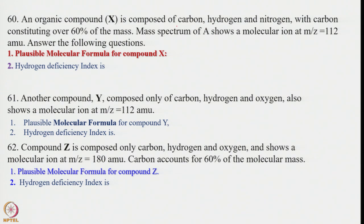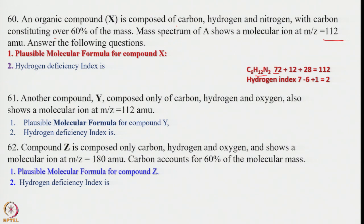Now let us look at a few mass spectrometry examples. An organic compound A is composed of carbon, hydrogen, and nitrogen, with carbon constituting over 60% of the mass. The mass spectrum shows a molecular ion at m/z = 112. Since 60% of 112 is approximately 67, there should be at least 7 carbon atoms. Using Rule of 13, C6H12N2 is a plausible molecular formula with HDI = 2. Similarly, without nitrogen but with oxygen, C6H8O2 gives HDI = 3.